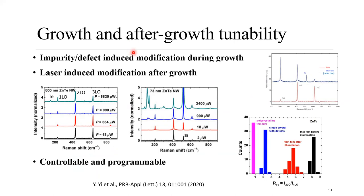We know that impurities and defects can induce change. There's another way to induce change, which is to use a laser. For very large nanowires, if we use different laser powers, we can see that with higher laser power you start to see a somewhat enhanced 1LO peak. Also, you start to see a defect-related peak. For a smaller nanowire, you can see a more dramatic change due to laser illumination, because that induces defects. With this observation, we actually can have a way to control these ratios. It shows that in different samples — either high-quality bulk materials or thin films — by illuminating with lasers or just by introducing defects, you can get almost any values you want with some accuracy.